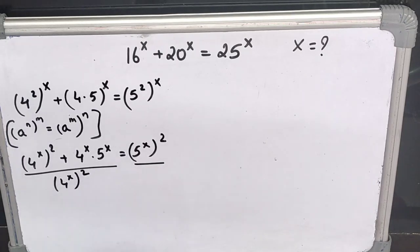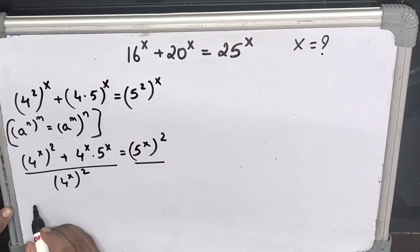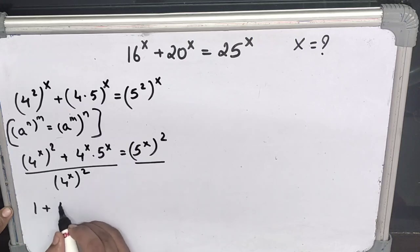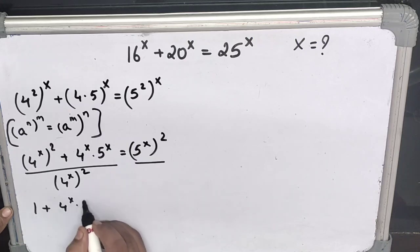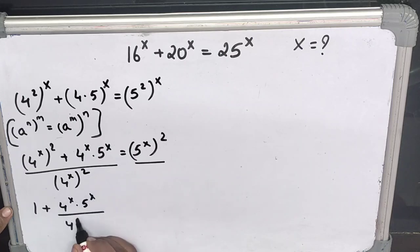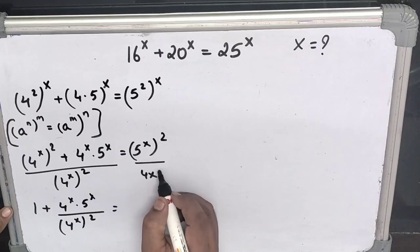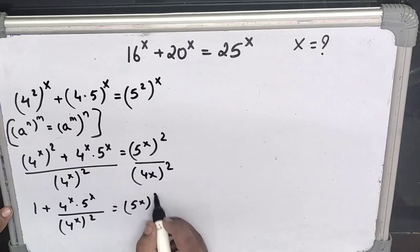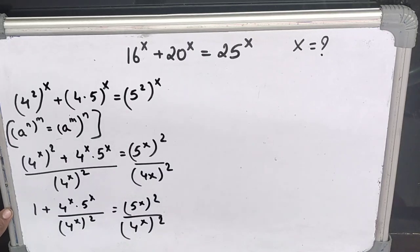Next we divide the whole equation on both sides by 4 to the power 2x. From this we get 1, and then 4x into 5x divided by 4x squared, giving us 5x to the power 2 over 4x to the power 2.